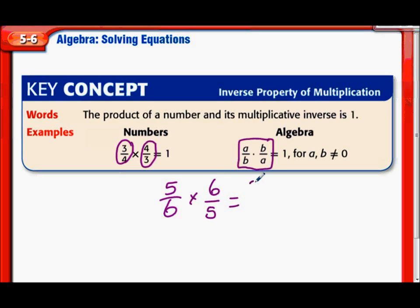Multiply our numerators together, we get 30. Multiply our denominators together, we again get 30. And here's why it's 1, because 30 divided by 30 is of course 1. So when we multiply a number and its multiplicative inverse, we always end up with 1.